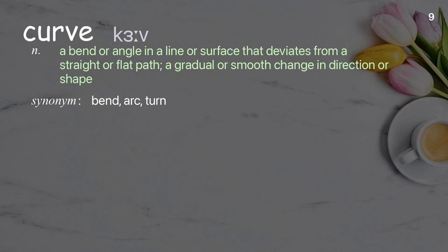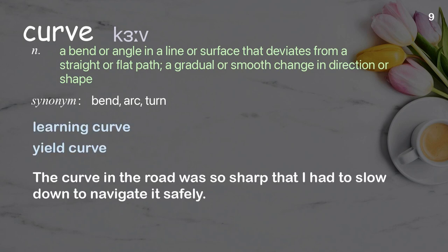Curve. A bend or angle in a line or surface that deviates from a straight or flat path; a gradual or smooth change in direction or shape. Examples: learning curve, yield curve. The curve in the road was so sharp that I had to slow down to navigate it safely.